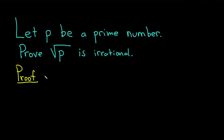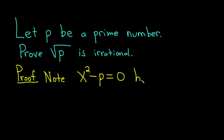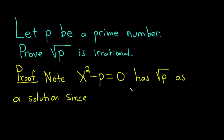So note first that the equation x squared minus p equals zero has the square root of p as a solution — it's also called a root. This is since if you take the square root of p and plug it in, you're just going to get zero, because you'll get p minus p, which is zero.